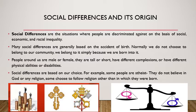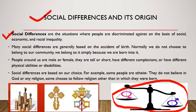Coming to social differences and their origin — where do these differences have their roots? Social differences are situations where people are discriminated against on the basis of social, economic, and racial inequality. Many social differences are generally based on accident of birth. We do not choose to belong to our community; we belong to it simply because we were born into it. People around us are male or female, tall or short, have different complexions, or have different physical abilities or disabilities.